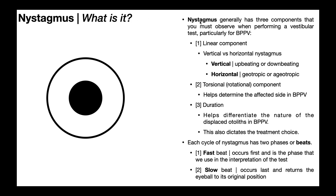A nystagmus generally is going to have three components: a linear component, either vertical or horizontal; a torsional or rotational component; and a duration — the time of its onset to the time it fatigues or ends. When you perform a Dix-Hall-Pike maneuver, you need to be thinking about all three of these things: the linear component, the torsional component, and the duration.